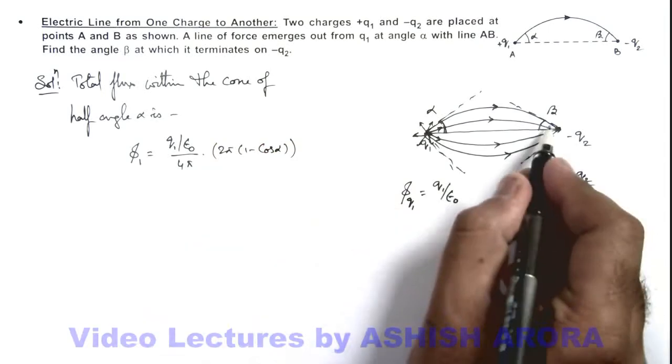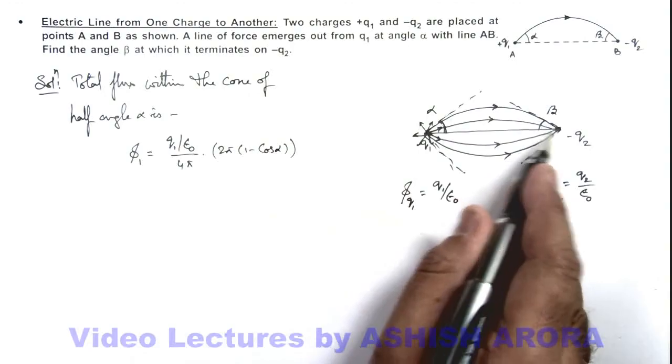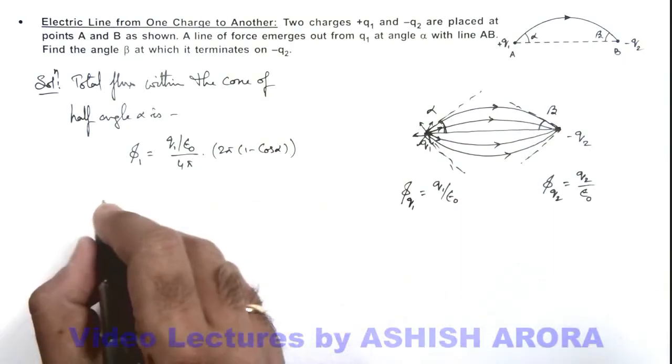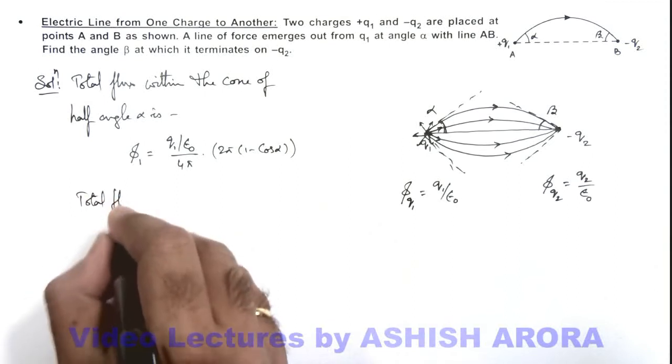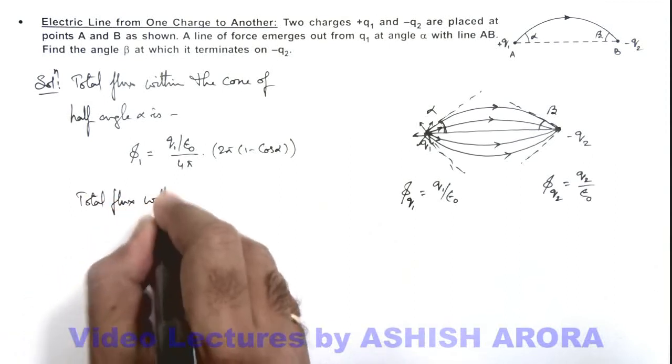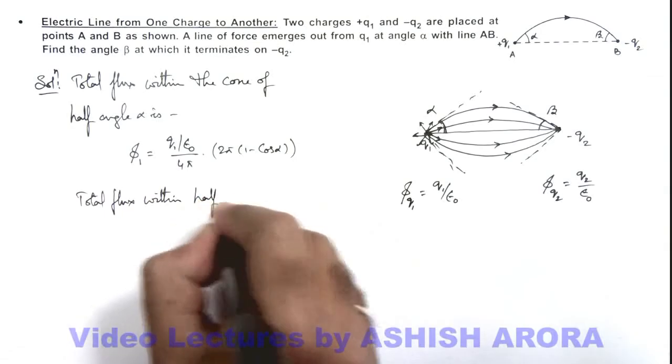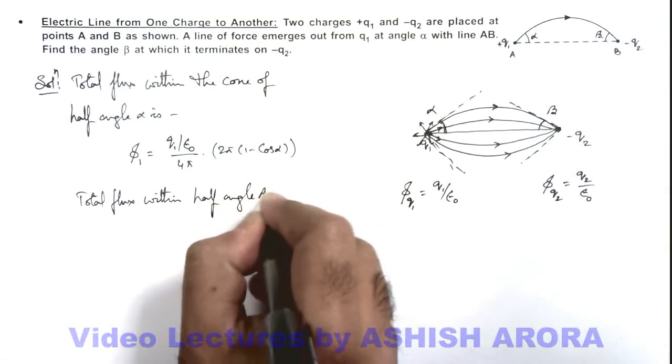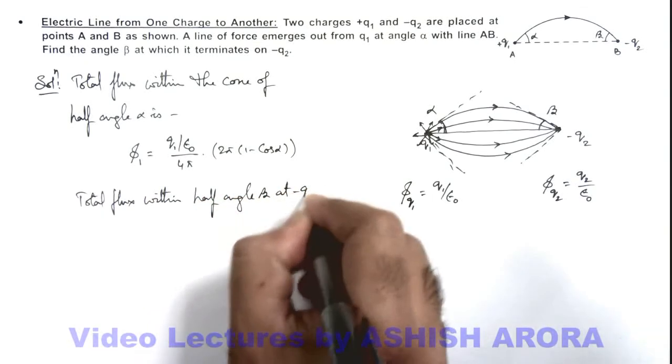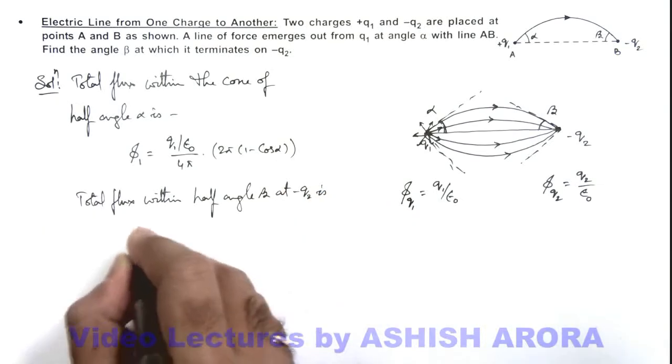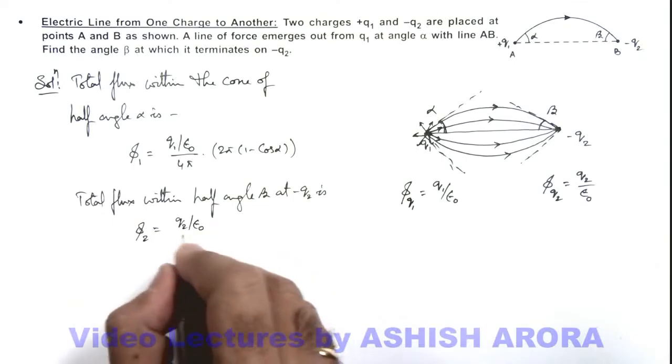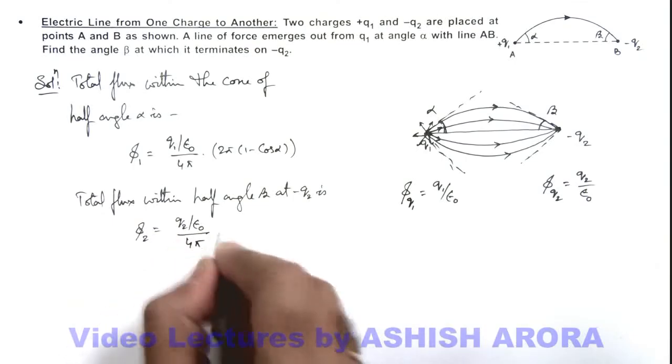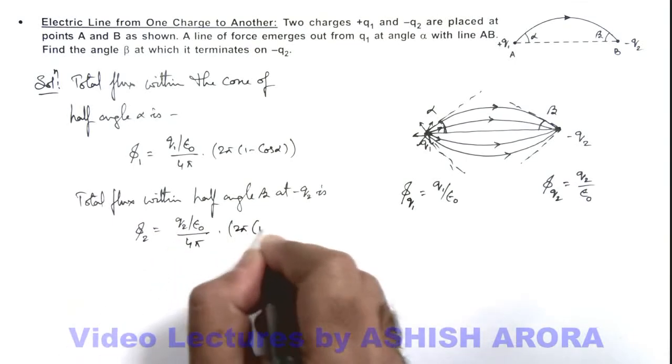Similarly the flux which is terminating on q2 can be given as total flux within half angle beta at minus q2. This phi 2 we can write as q2 by epsilon not by 4 pi into 2 pi (1 minus cos beta).